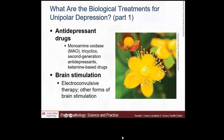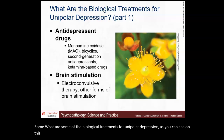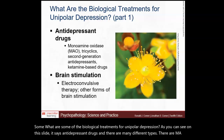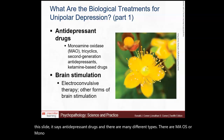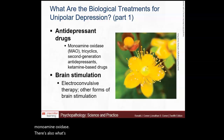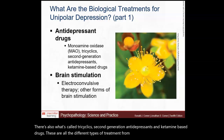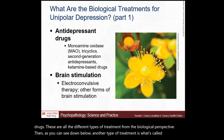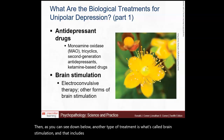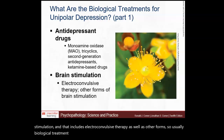The biological treatments for unipolar depression include antidepressant drugs of many different types: MAOs or monoamine oxidase inhibitors, tricyclics, second generation antidepressants, and ketamine-based drugs. Another type of treatment is brain stimulation, which includes electroconvulsive therapy as well as other forms. Typically, biological treatment means antidepressant drugs first and foremost.